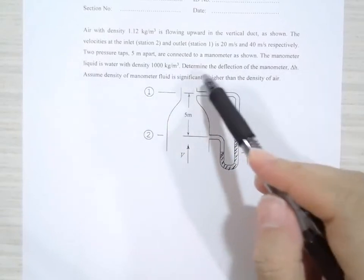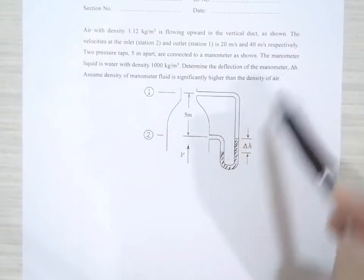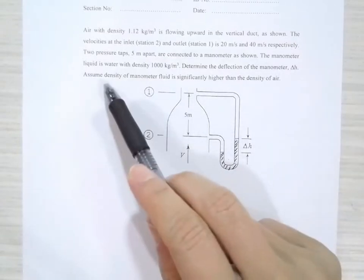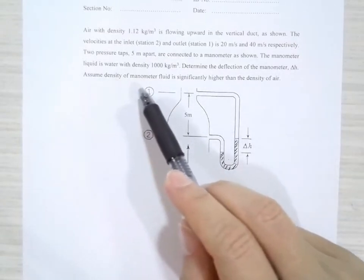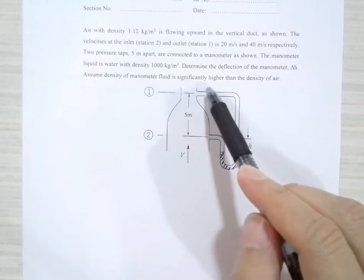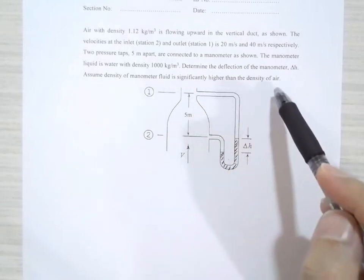We are asked to determine the deflection of the manometer, delta H, this height here, and assume density of manometer fluid is significantly higher than density of air.